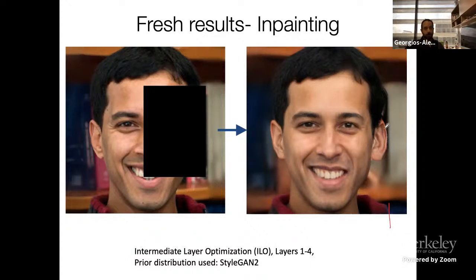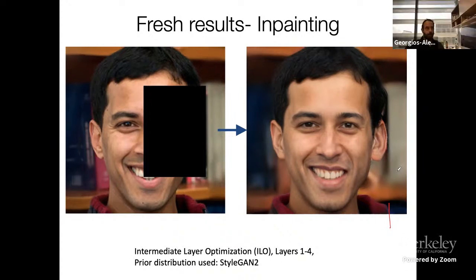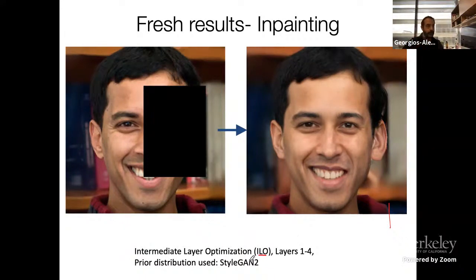You may notice a few artifacts that could be improved further, but ILO produces very good results for missing data. It's worth noting we're using StyleGAN2 off the shelf, but modifying the way we use StyleGAN2 to do inpainting. The key point is the generator was never trained specifically for inpainting or super resolution — we're guiding its latent space at inference time.